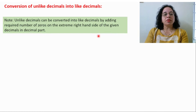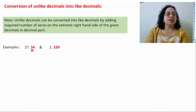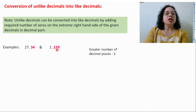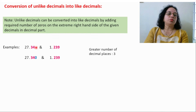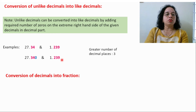Conversion of unlike decimals into like decimals: we add the required number of zeros after the decimal places. Here you can see that decimal places are 2 and 3 — they are unlike decimals. The greater number of decimal places is 3, so we will convert into 3 decimal places. We need to add one zero here: 0.340 and 1.239. Now both have 3 decimal places, so the unlike decimals have been converted into like decimals.